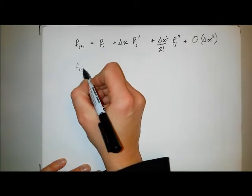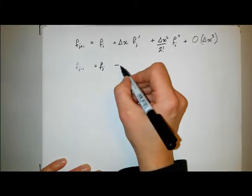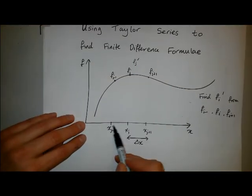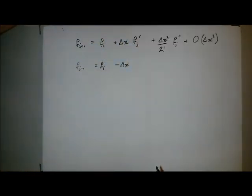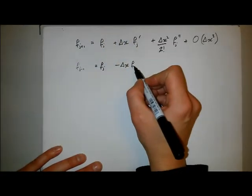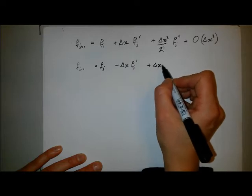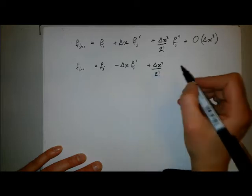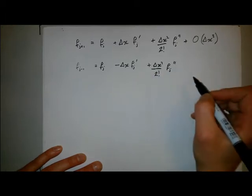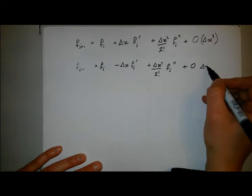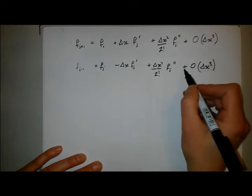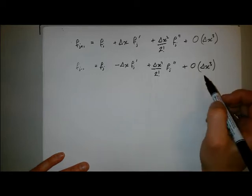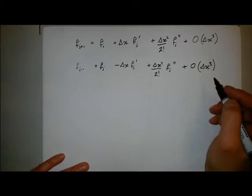And now f_{j-1}. So this is now minus delta x, because f_{j-1} is a distance minus delta x from x_j. f_{j-1} = f_j - delta x f'_j + delta x squared over 2 factorial f''_j plus order delta x cubed. I don't say minus there because this order means proportional to, so that constant of proportionality could be negative or positive.